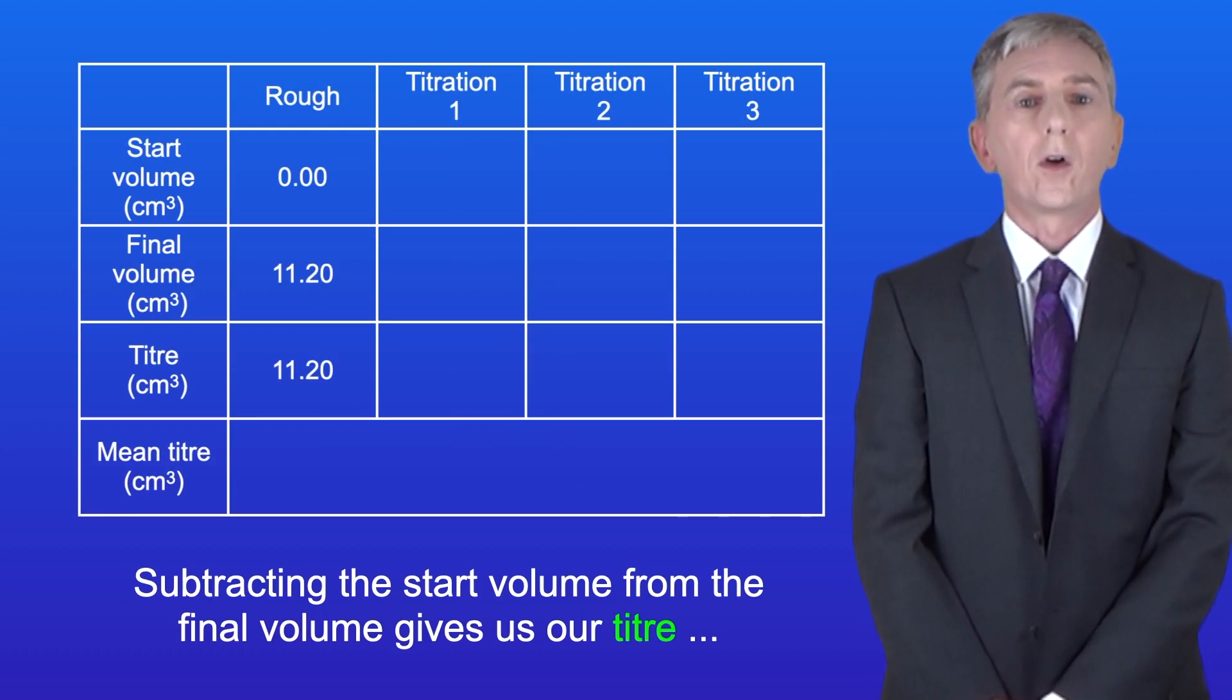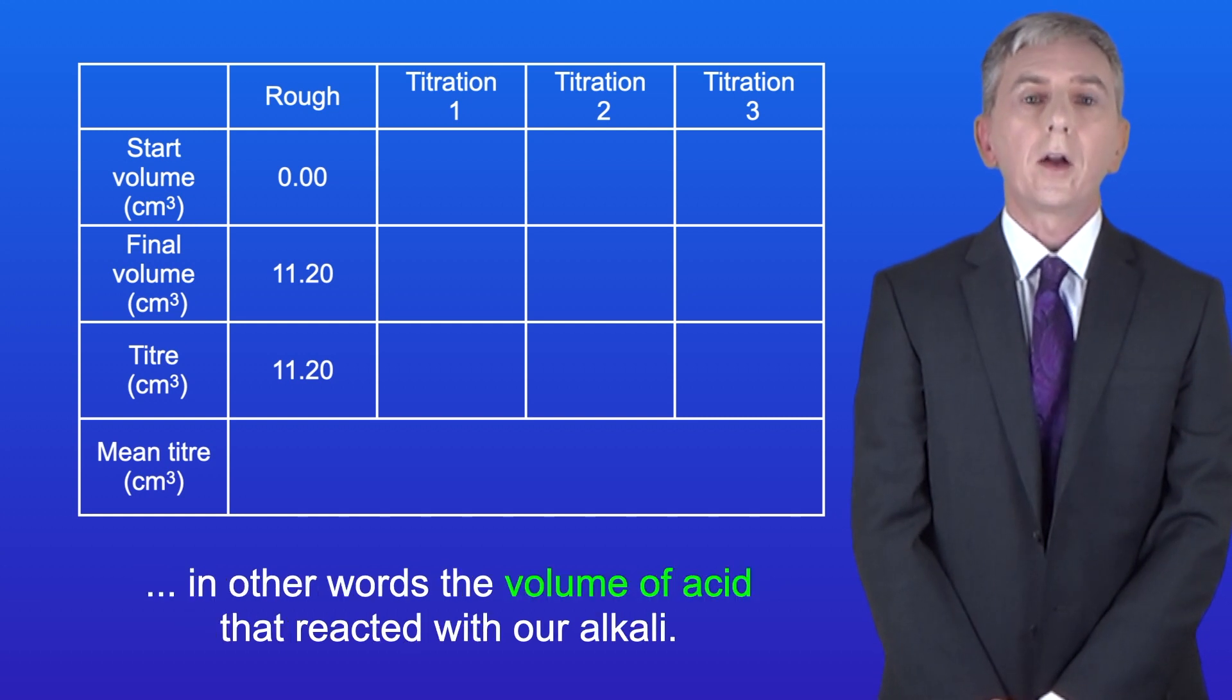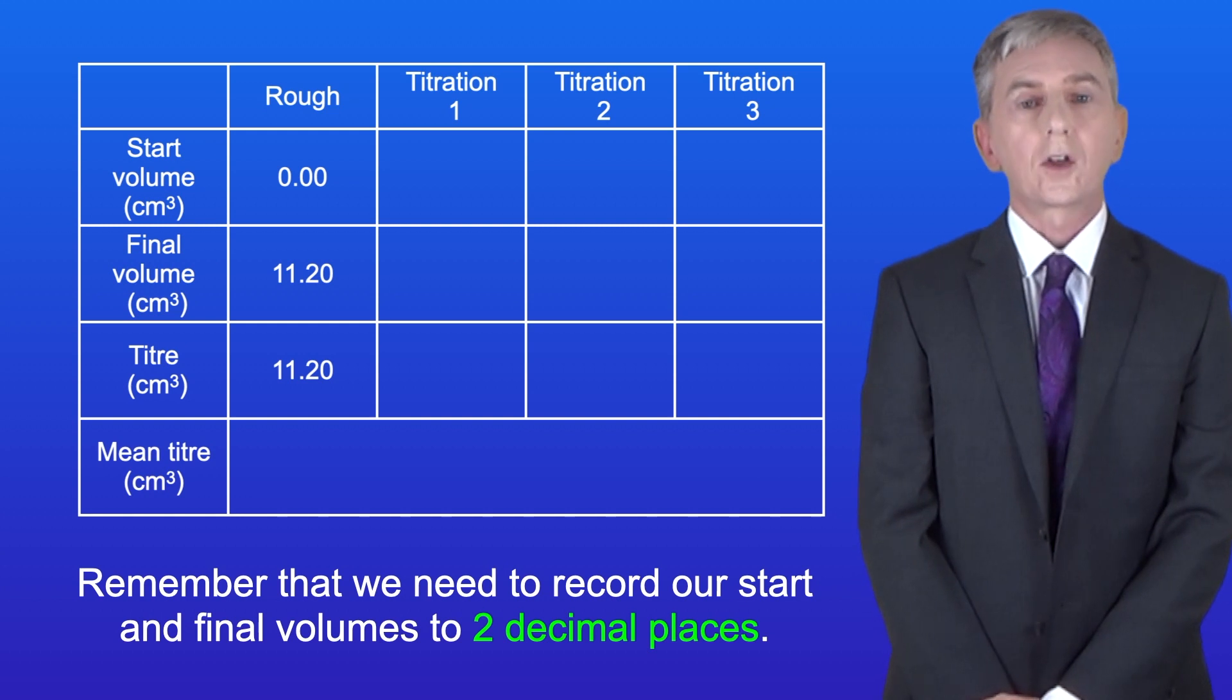Subtracting the start volume from the final volume gives us our titer. In other words the volume of acid that reacts with our alkali. Remember that we need to record our start and final volumes to two decimal places.